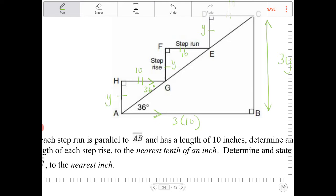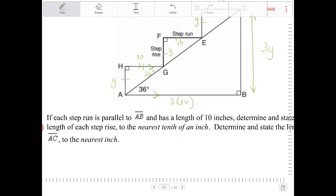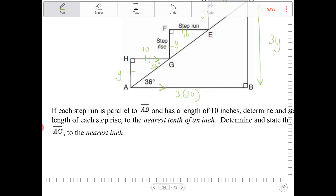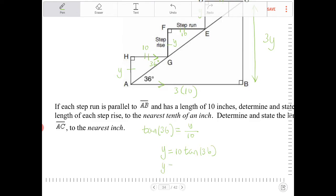And if that's the case, then we can find out what Y is pretty easily because Y is opposite of 36 degrees and 10 is adjacent to 36 degrees. So therefore, we can use a tangent ratio. Tangent of 36 is equal to Y over 10. Cross multiply both sides by 10. We get 10 tangent of 36. So let's find out what that is in the calculator.